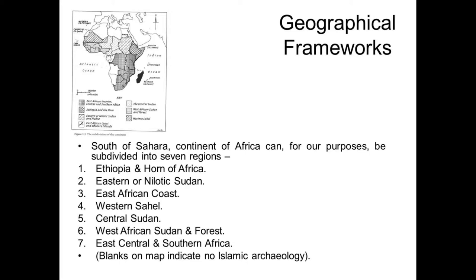South of the Sahara, we can divide the continent into seven different regions: Ethiopia and the Horn of Africa, the Eastern or Nilotic Sudan, the East African coast, the Western Sahel, the Central Sudanic region — Sudanic referring to the geography and environment, not the modern country — the West African Sudan and forest, and East Central and Southern Africa. The blank areas on the map are the only areas in my survey where I could find no Islamic archaeology whatsoever — for example, in Angola and Namibia.